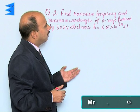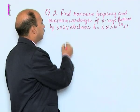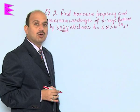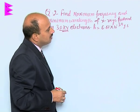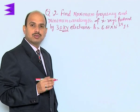Now, see in this find maximum frequency and minimum wavelength of x-rays produced by 30 kV electrons. H is equal to 6.63 into 10 raised to power minus 34 joule second.